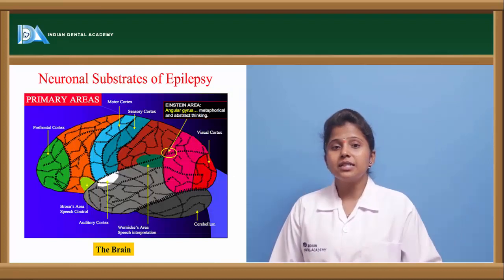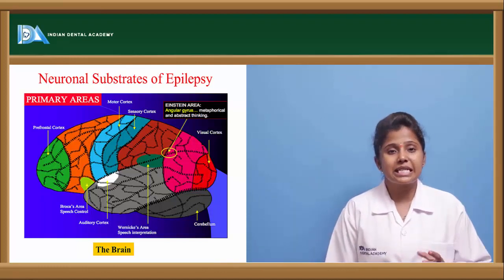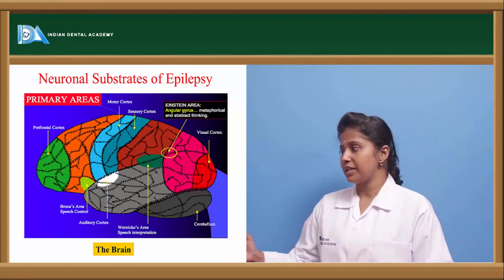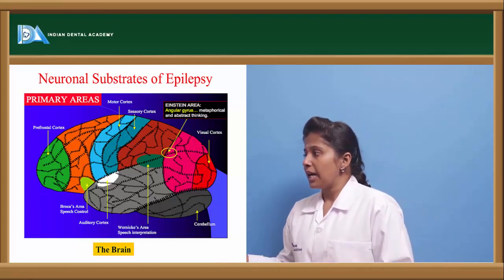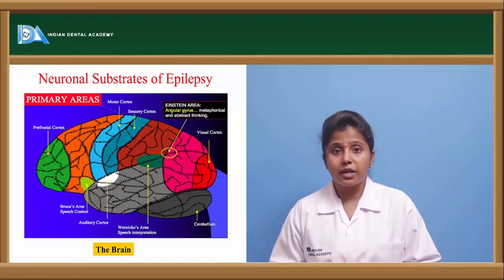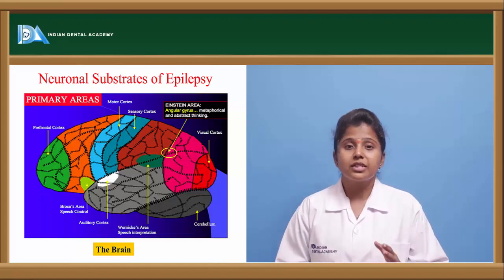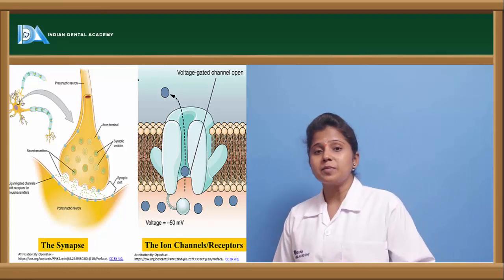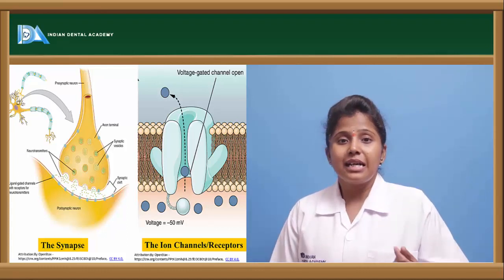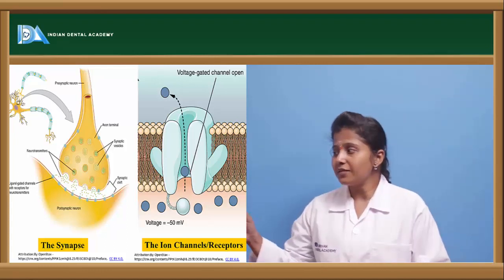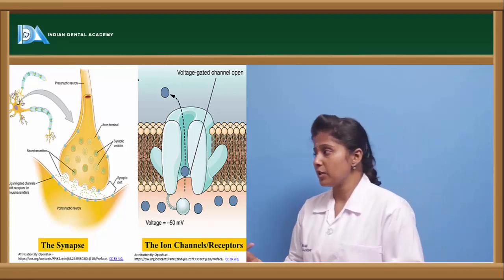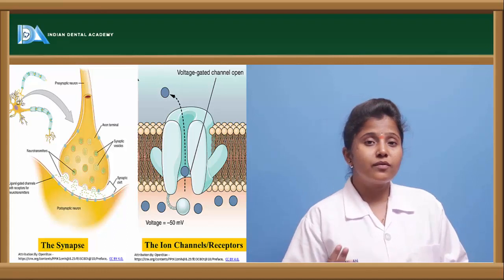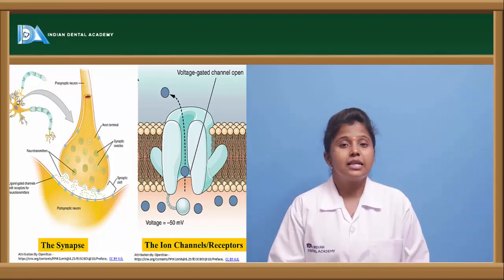In epileptic conditions, there are three main regions where epilepsy can originate: the brain (including auditory cortex, visual cortex, sensory cortex, and motor cortex), the synapse (where neurotransmitters are released generating electrical impulses), and the ion channels. If there is any disturbance in the synapse, epilepsy or seizures can occur. Ions play a major role — if sodium or calcium levels are reduced, seizures can be caused.